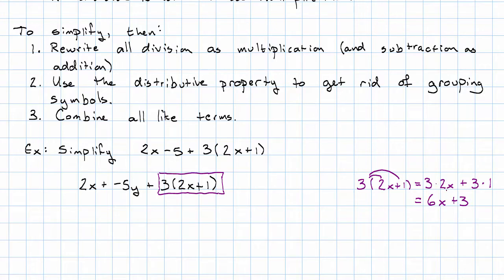As you get more practice, you might find that you're able to skip writing this step out, as long as you make no mistakes as a result. I've used the distributive property to rewrite, so I have 2x plus negative 5 plus 6x plus 3.